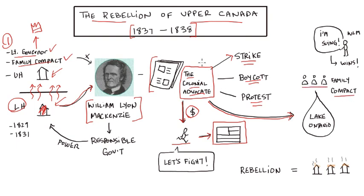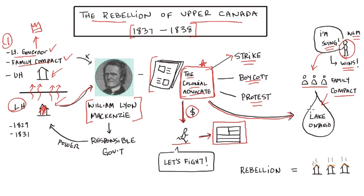While he was gone, the Family Compact, who disliked what he was publishing, took his printing press — which he used to make copies of the Colonial Advocate — and threw it into Lake Ontario, destroying it. Mackenzie heard about this in the United States, came back, and sued the Family Compact for destroying his property. He won in court and became a hero, especially to those in the lower house.